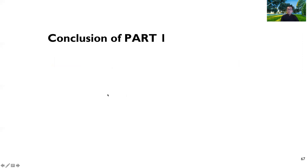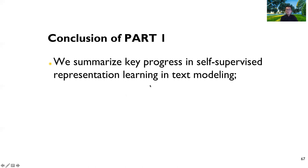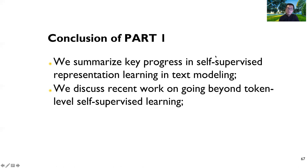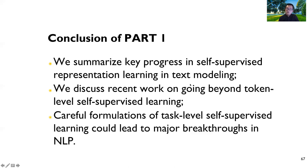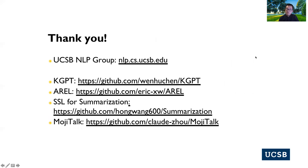For the conclusion of part one: we summarized key progress in self-supervised representation learning in text modeling and discussed going beyond token-level self-supervised learning. More specifically, I went into two problems in depth, focusing on how to carefully formulate task-level self-supervised learning problems. I personally believe that with carefully designed task-level self-supervised learning for NLP, it can possibly lead to major breakthroughs. Open source GitHub repositories for KGPT, ARIEL, SSL for summarization, and MojiTalk are available on our group website.